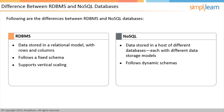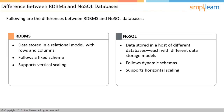Scalability: RDBMS supports vertical scaling — to handle more data, a bigger server is required, which increases cost. Although you can scale an RDBMS across multiple servers, it is a challenging and time-consuming process. Scaling is horizontal in NoSQL; you can scale across multiple servers using cheap commodity hardware or cloud instances, making scaling cost-effective. Many NoSQL technologies automatically distribute data across different servers.